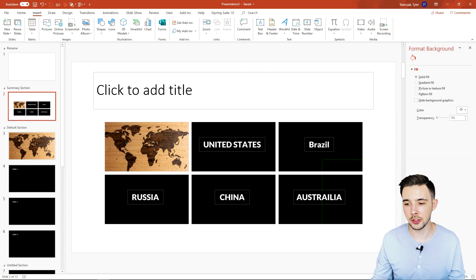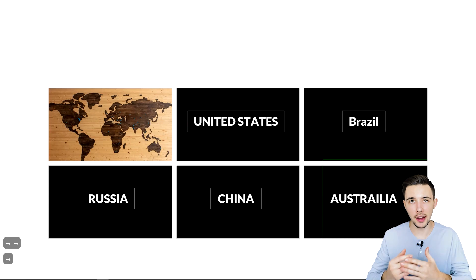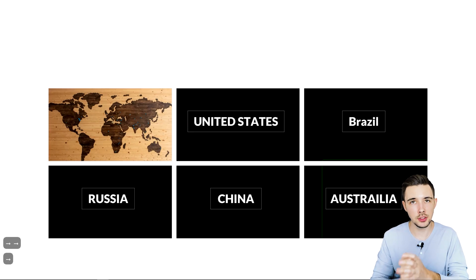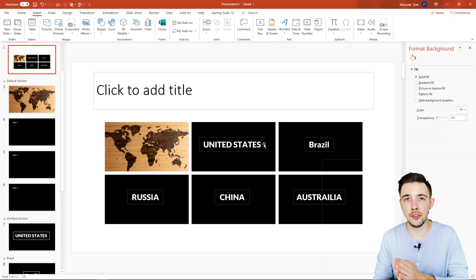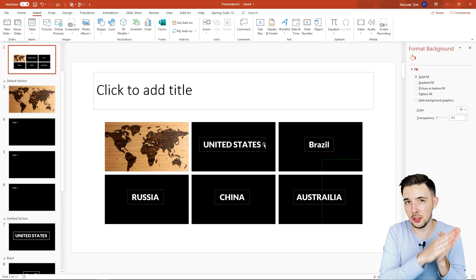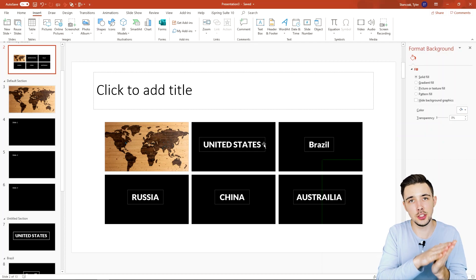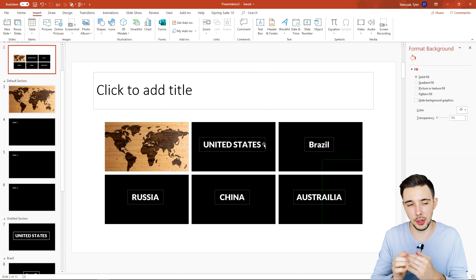Now if I go into presentation mode and click on one of the thumbnails, it's going to take me to the next slide within that section — slide one, slide two, slide three. Then it's going to bring me back to the summary section slide once I'm done with that section. This is a quick way to let people jump to certain sections of your PowerPoint and then bring them back to that index page.